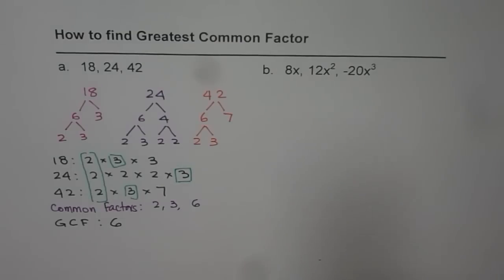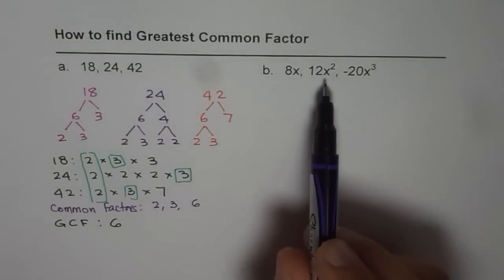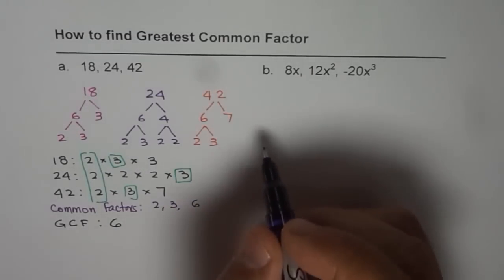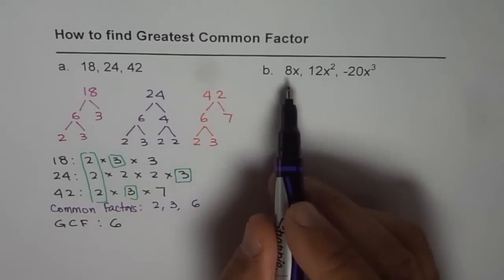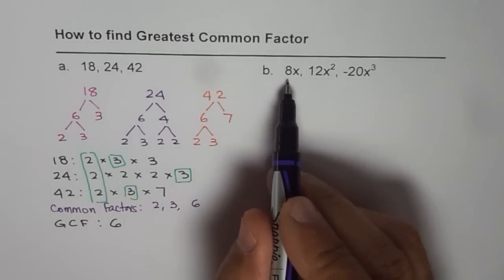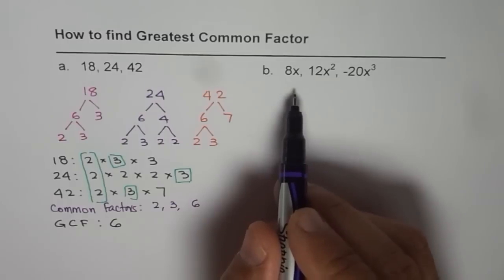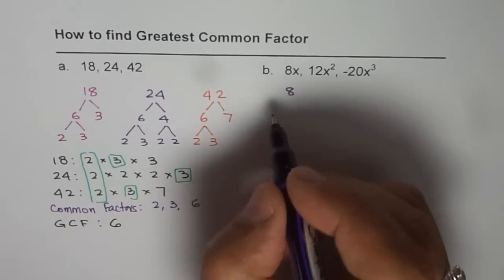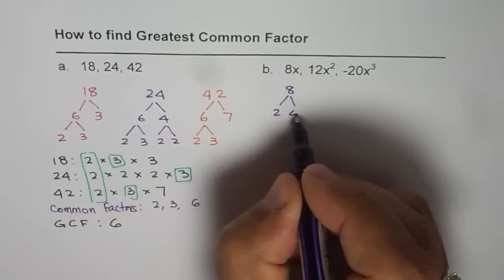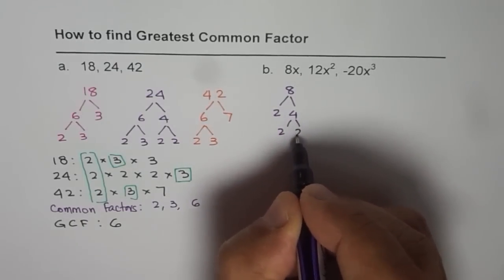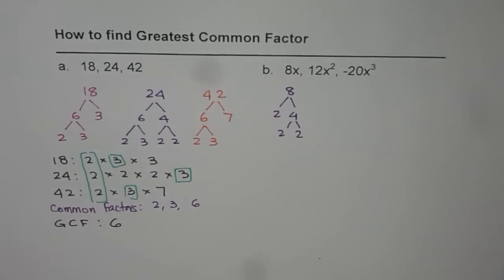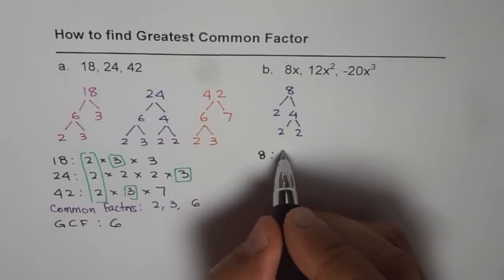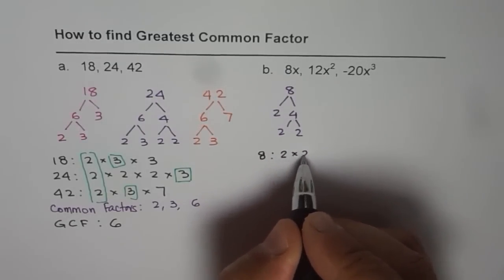Now let's find the greatest common factor for the three algebraic terms. Let's write down the factors for 8x. When we do prime factorization of 8 we get 2 times 2 times 2. We will take the x terms separately. So the prime factors of 8 are 2 times 2 times 2.